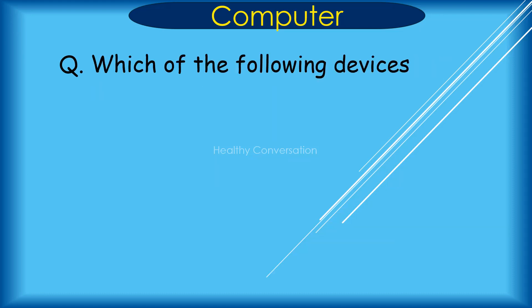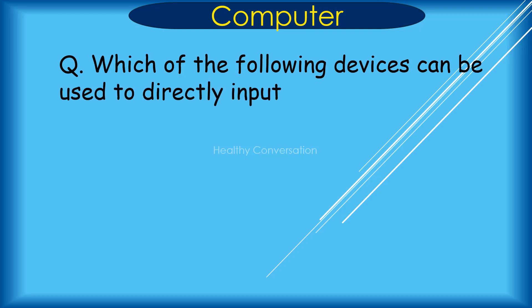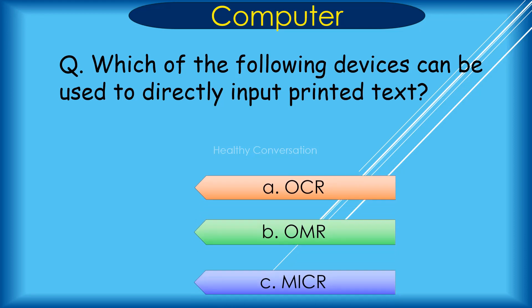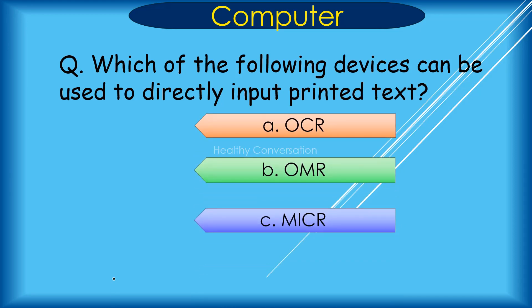Question: Which of the following devices can be used to directly input printed text? A. OCR, B. OMR, C. MIC, D. Scanner. Correct answer is A. OCR.